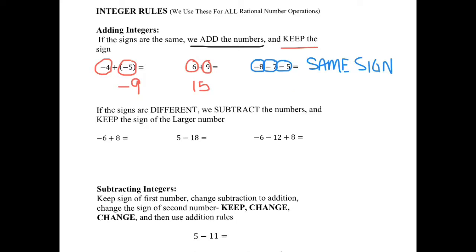Now let's talk about if the signs are different — still adding integers. If the signs are different, we subtract the numbers and keep the sign of the bigger number. For example, negative 6 and positive 8. Are the signs the same or different? They're different. So I'm going to subtract: 8 minus 6 is 2. Keep the sign of the bigger number — 8 is the larger number and it's positive, so my answer is positive 2.